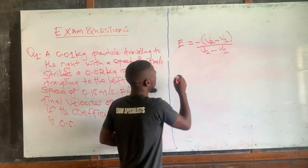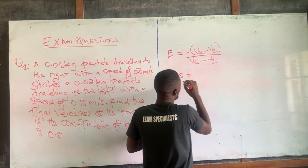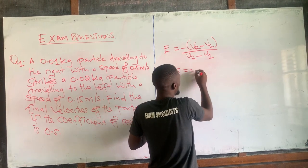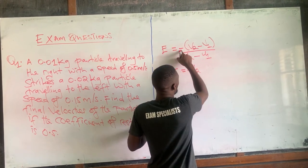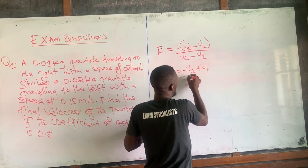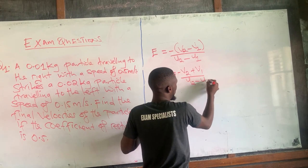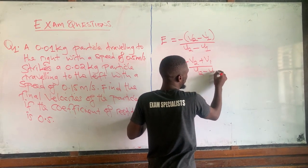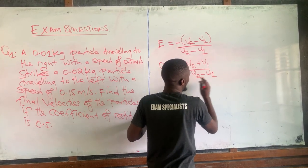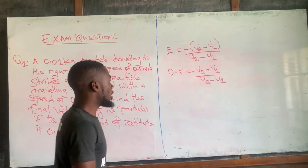So we put: 0.5 equals negative (v2 minus v1) over (u2 minus u1). The initial velocities are given — u1 is for particle 1 travelling to the right, and u2 is for particle 2 travelling to the left.